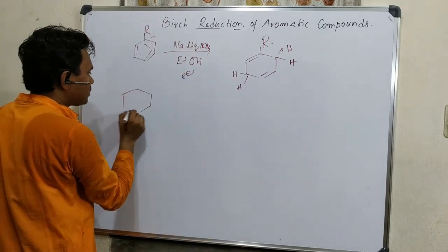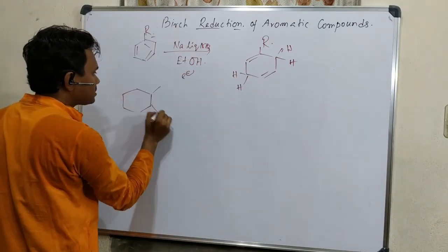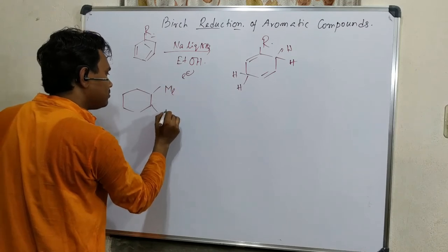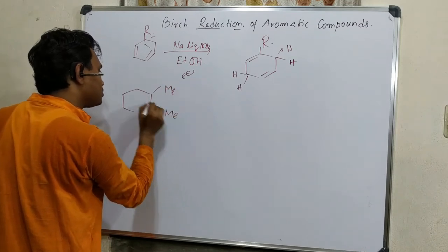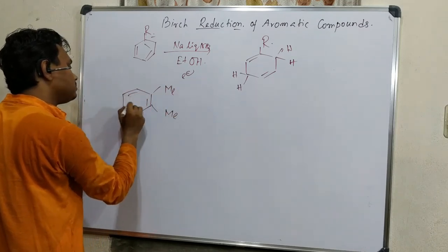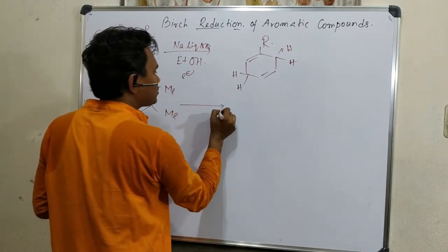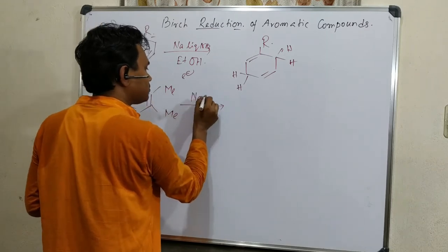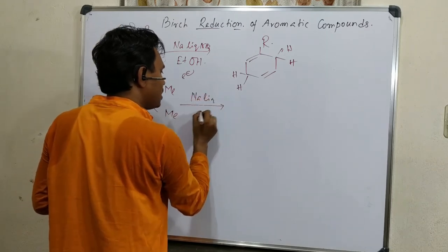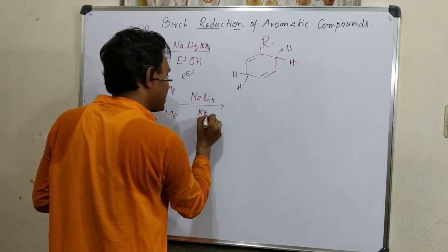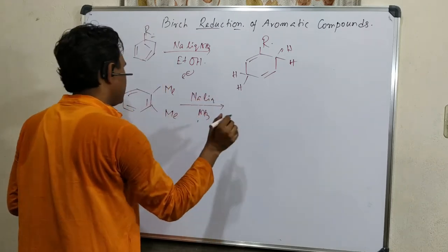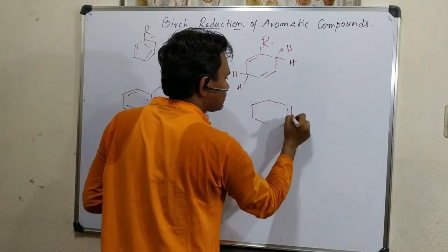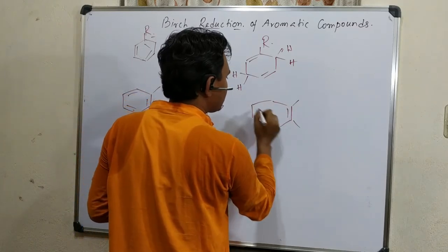Similarly, 1,2-dimethylbenzene under similar reaction conditions — sodium, liquid ammonia, and ethanol — produces this derivative. Similarly, a di-tert-butyl-containing compound using lithium, liquid ammonia, and ethanol produces the corresponding product.